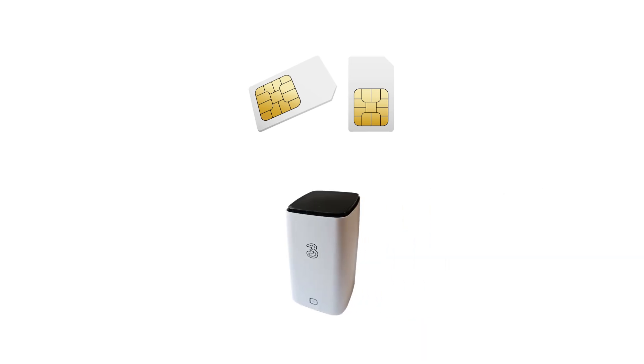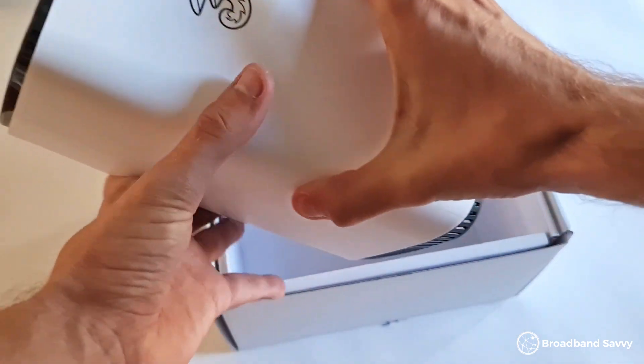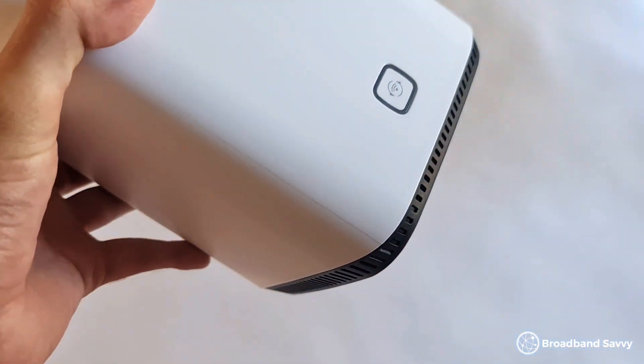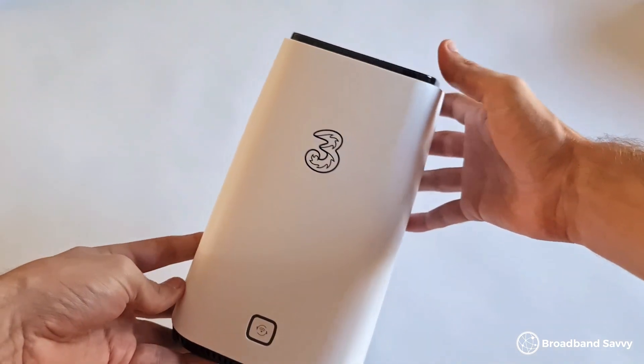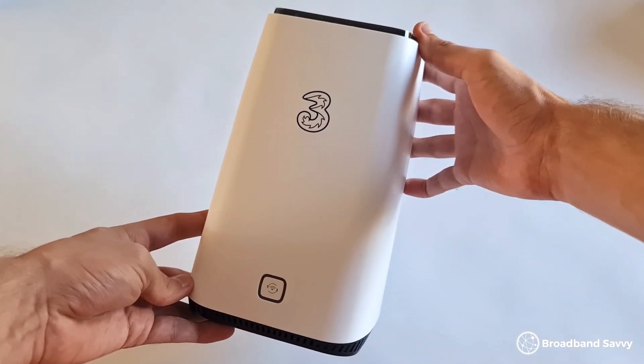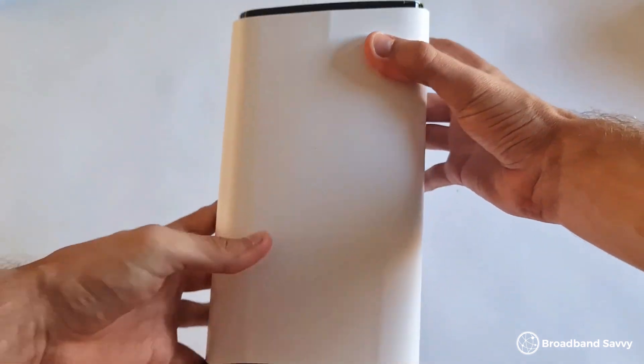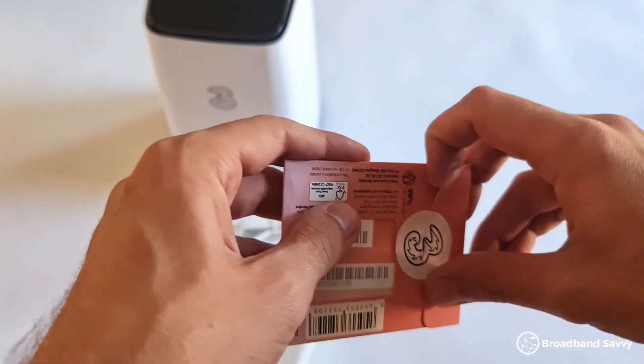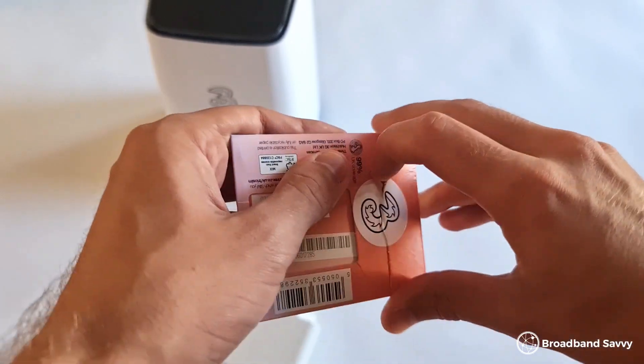If you want to get online using 4G or 5G, you'll need two things: a SIM card with a data plan attached, and a device you can use the SIM card with that can create a Wi-Fi network. If you'll be using mobile broadband as your main way of getting online at home, the best type of device to choose is a router, like the 3 4G hub or 5G hub. These devices work just like a traditional Wi-Fi router, except they take a SIM card rather than plugging into a broadband socket. They use mains power and create a Wi-Fi network you can use to get online on up to 64 devices at once. 3's routers come with an unlimited data SIM, saving you the hassle of going and buying one separately.